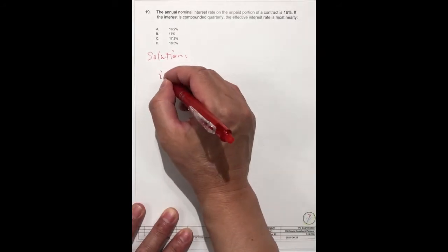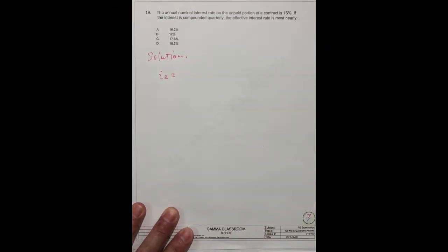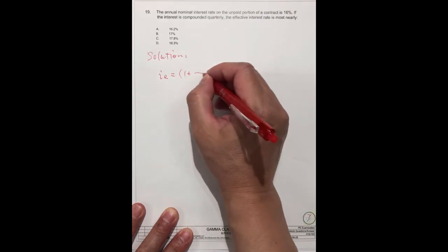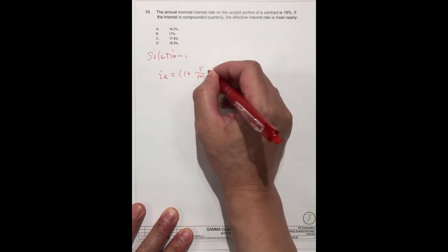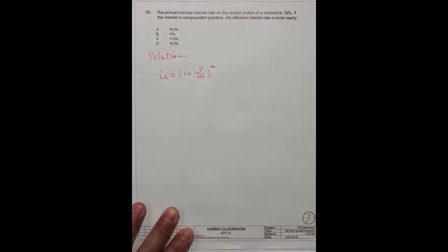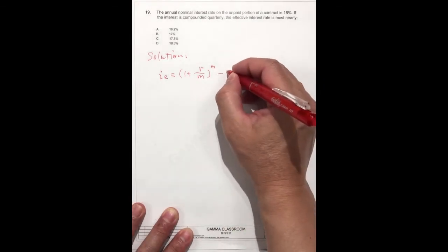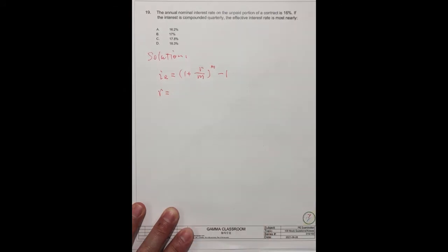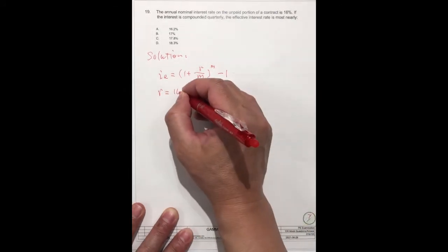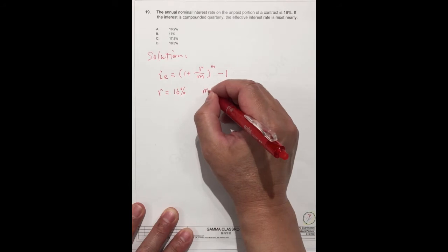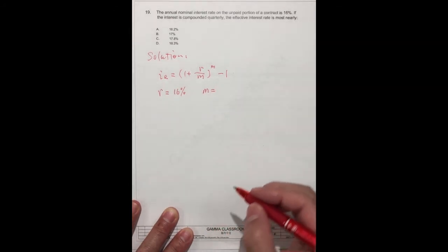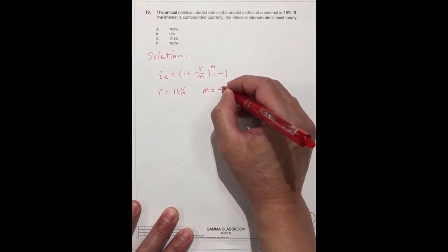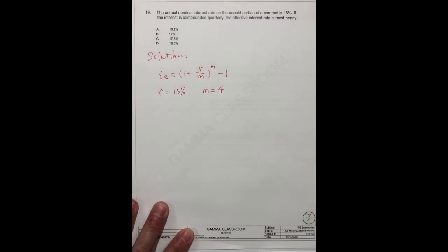The formula is IE equals 1 plus R over M to the power of M, minus 1. The R is the interest rate, 16%. And M is quarterly. One year has four quarters.